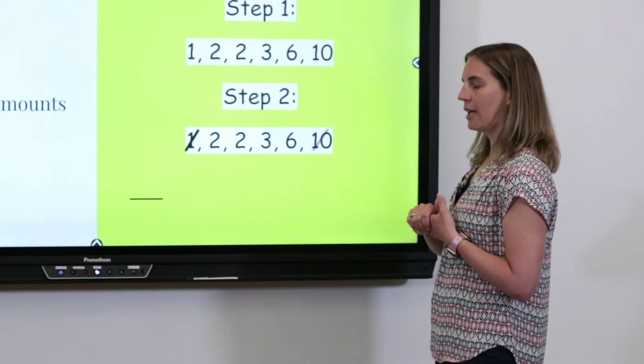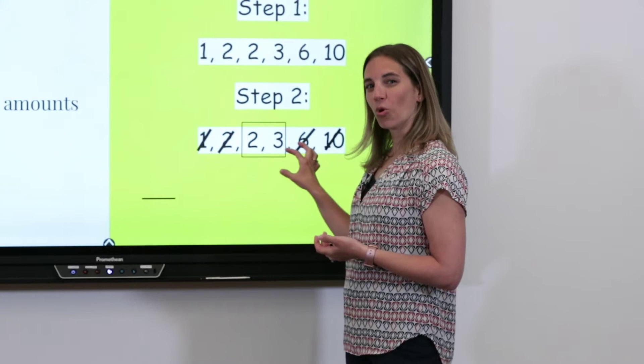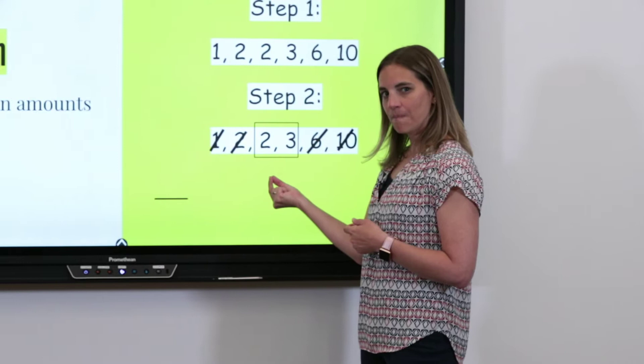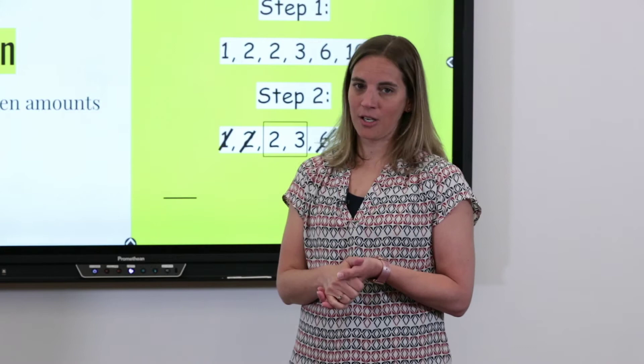What do you notice about those two middle numbers? We've got to group them together. We need the number that is exactly between two and three. So if you're thinking, "Mrs. Hoffman, there is no number between two and three" — well, actually there is. There's no whole number between two and three, but there is a fraction or a decimal between two and three.